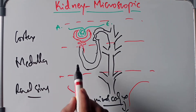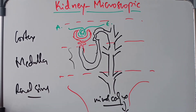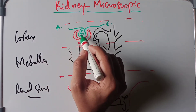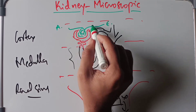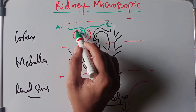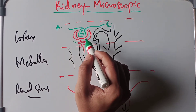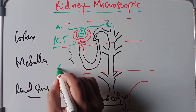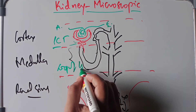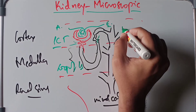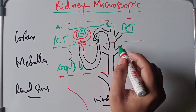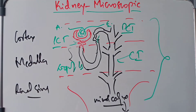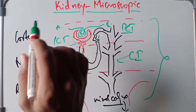Sorry about my diagram. Basically, this is the afferent arteriole — it forms a meshwork of capillaries to form the glomerulus, and then it leaves by becoming the efferent arteriole. This is the Bowman's capsule, then the proximal convoluted tubule, this forms the loop of Henle, this is the distal convoluted tubule, and this is the collecting duct. So this is the microscopic structure of the kidney.